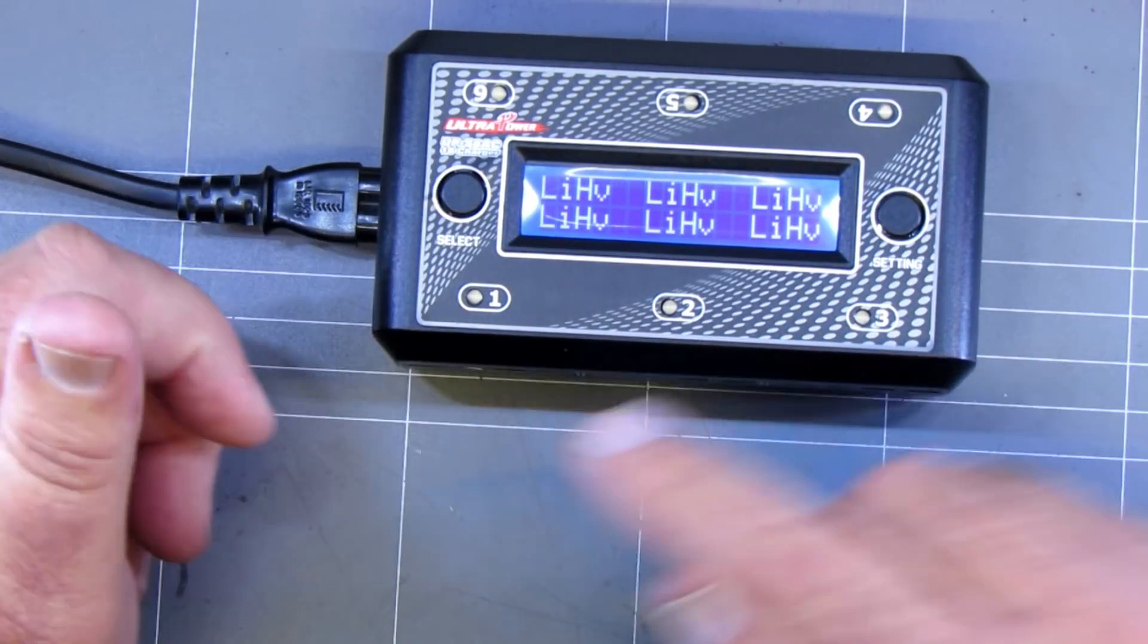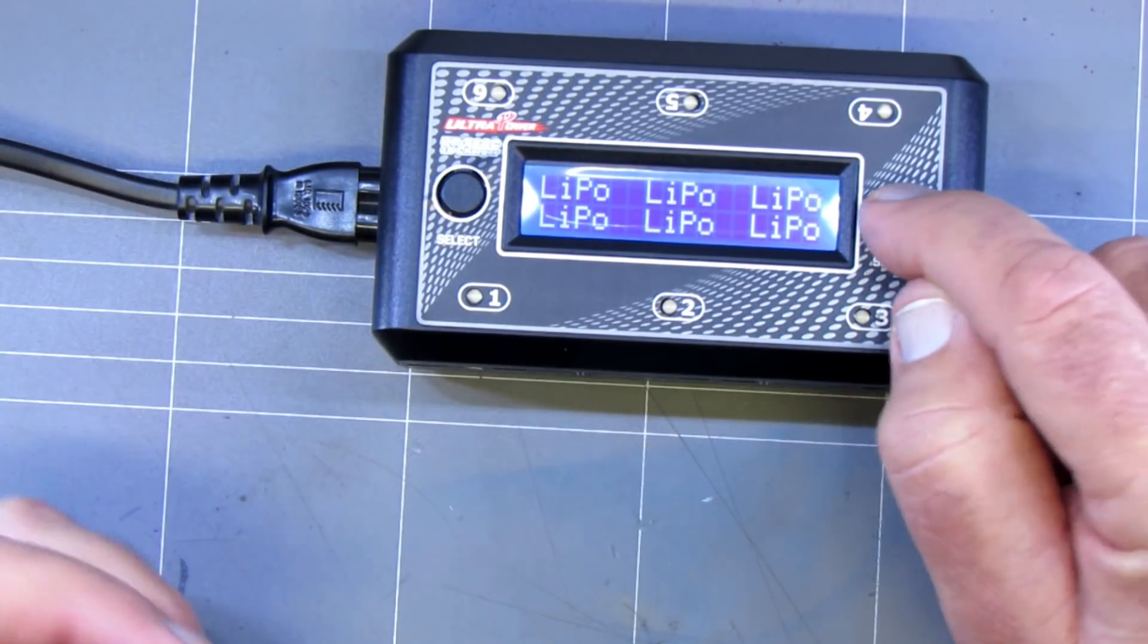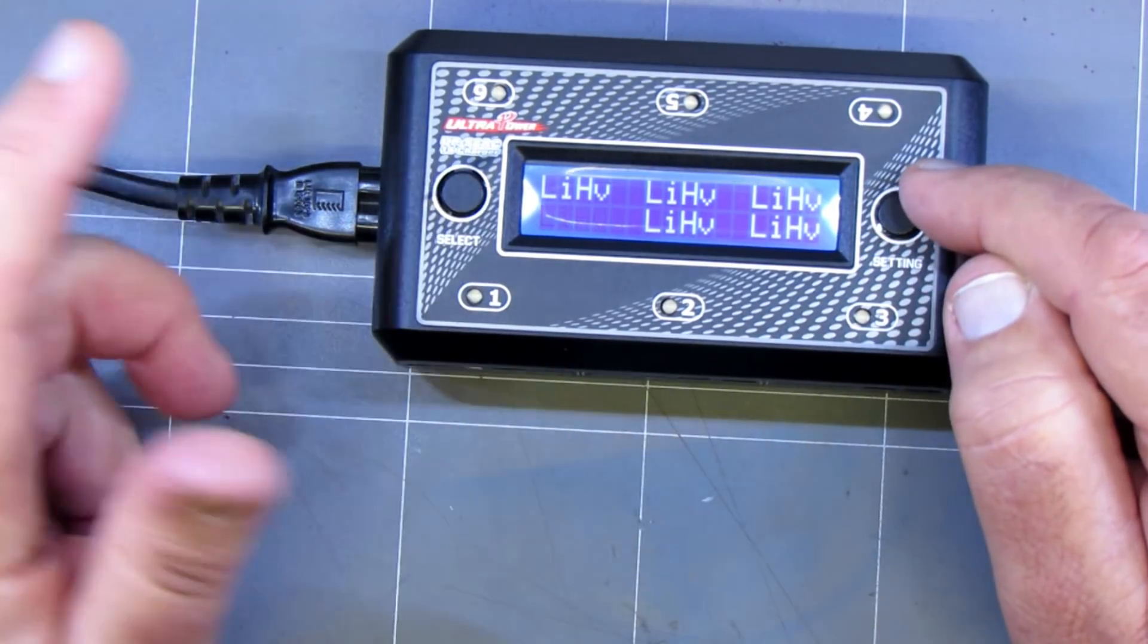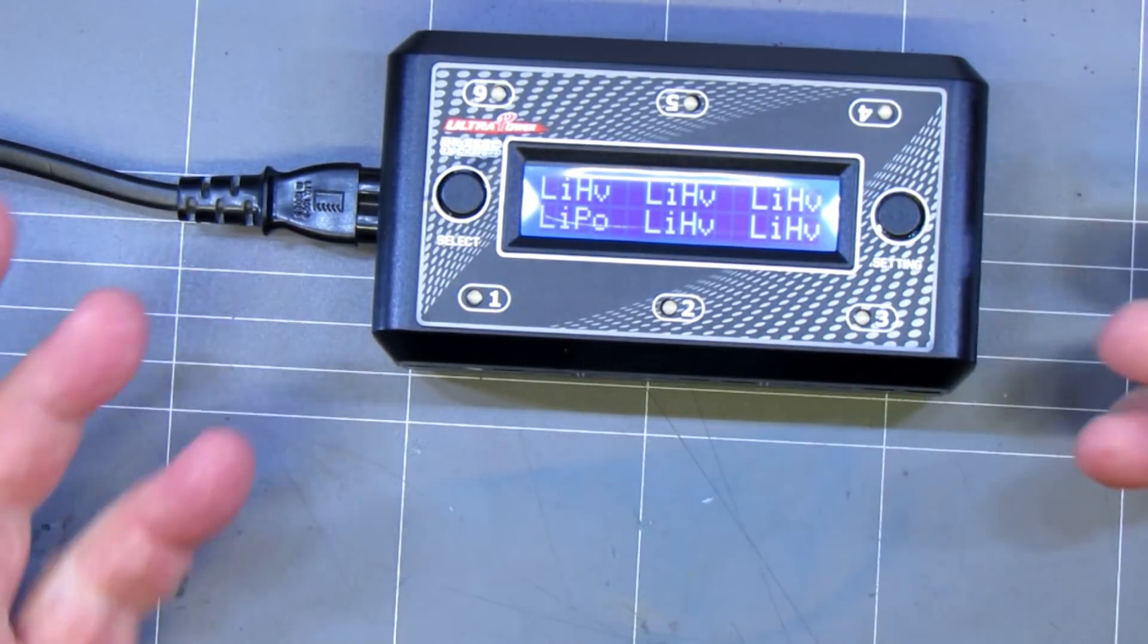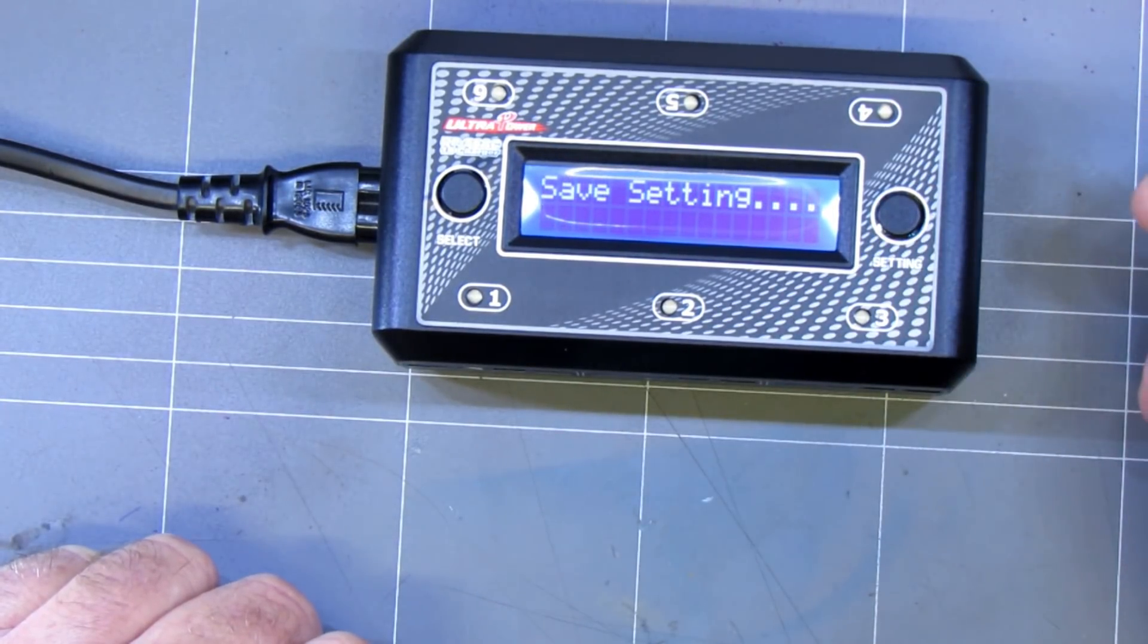Press the select button again and it actually brings up the battery type. You can highlight that. It'll go to LiPo, the high voltage batteries or you can select one individually. Each port will be different and just hold the button down to select that port and it will save that.